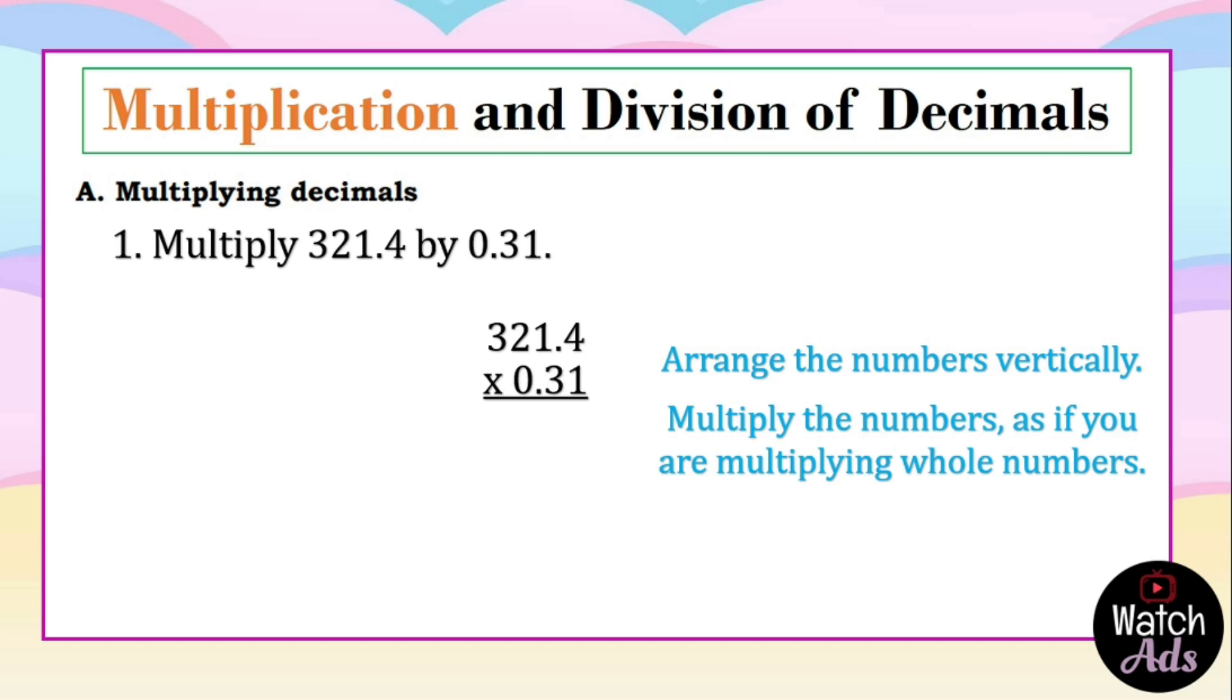So we start from the rightmost part of the numbers. We multiply 1 and 4 is 4. 1 multiplied by 1 is 1. 1 multiplied by 2 is 2. 1 multiplied by 3 is 3. Next, 3 multiplied by 4 is 12, 2 carry 1. Then 3 multiplied by 1 is 3 plus 1 is 4. 3 multiplied by 2 is 6. And 3 multiplied by 3 is 9.